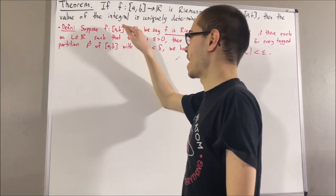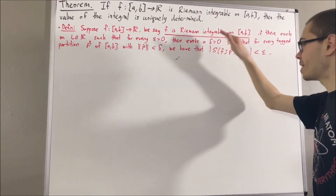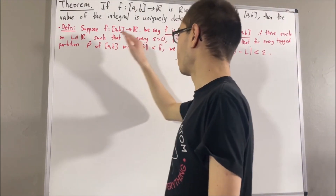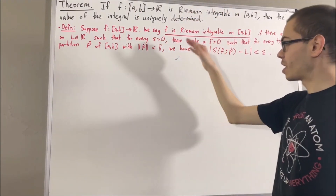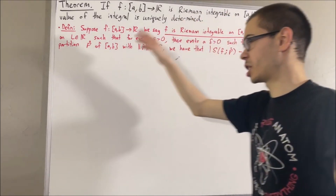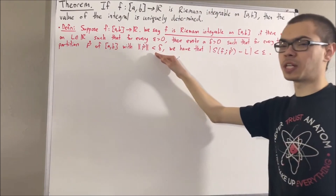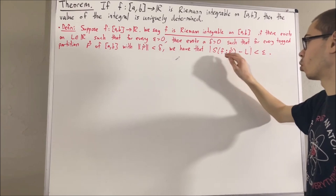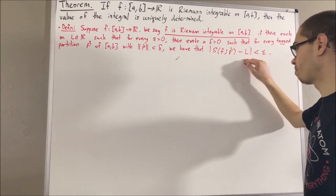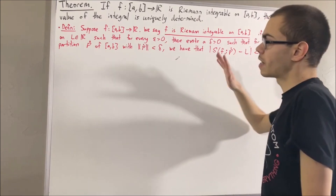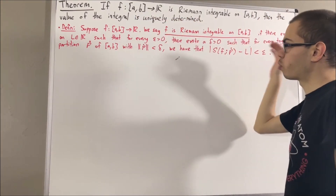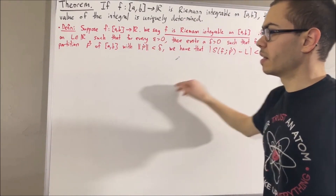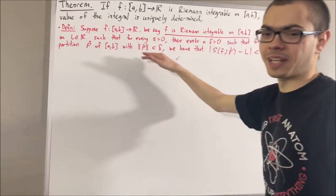Suppose f is a function from [a, b] to ℝ. We say f is Riemann integrable on [a, b] if there exists a real number L such that for every ε > 0, there exists a δ > 0, such that for every tagged partition P of [a, b] whose norm is less than δ, we have that the absolute value of the Riemann sum of f corresponding to P minus L is less than ε. The whole point of this theorem is to prove that if there is a real number L satisfying this statement, then it is the only real number that will satisfy it.